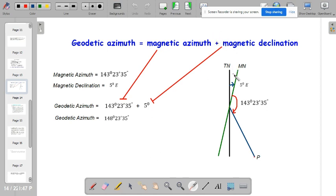Because since the magnetic declination is inclined towards the east, dapat magiging positive or ipa-plus mo yung magnetic declination. Now, kung ang magnetic declination mo ay leaning towards the west, so you have to subtract the magnetic declination here to get the geodetic azimuth. Now, in this case, the true azimuth is equals to 143 degrees 23 minutes 35 seconds plus 5 degrees or the total is 148 degrees 23 minutes and 35 seconds. So, ito yung ginagamit natin sa ating general formula natin pagkuhan ng geodetic azimuth.